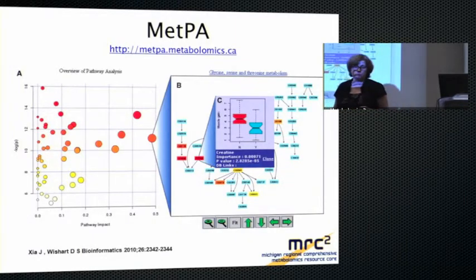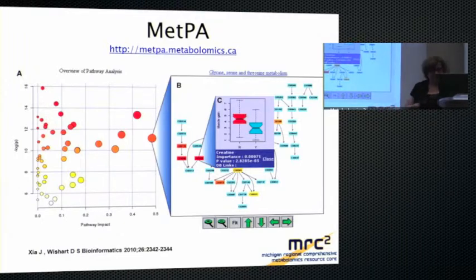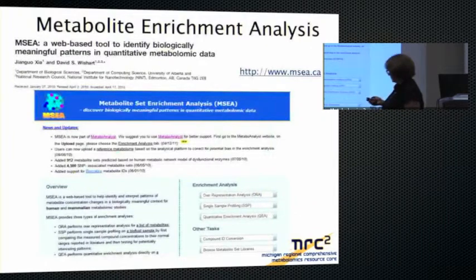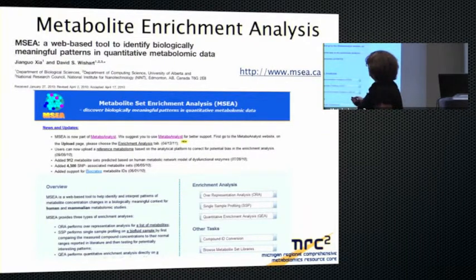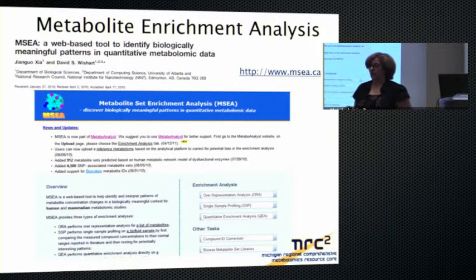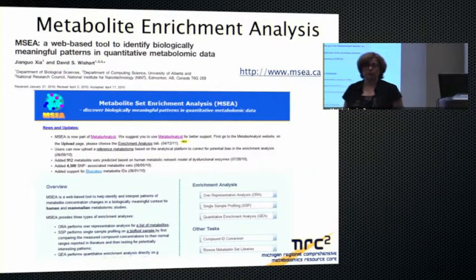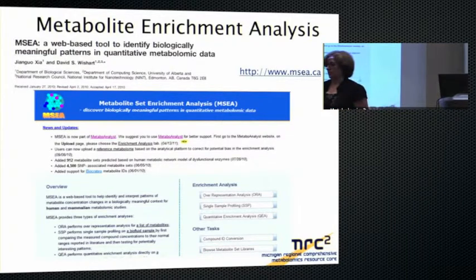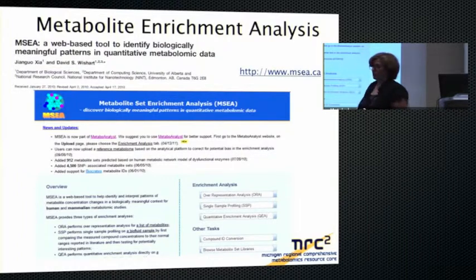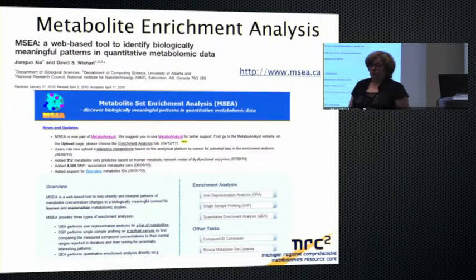MetaboAnalyst is a web-based, open-source tool. It includes a pathway mapping feature where metabolites in a pathway are color-coded by significance. It also includes a metabolite enrichment analysis tool called MSEA, which is analogous to GSEA — the Gene Set Enrichment Analysis tool from the Broad Institute — but applied to metabolites.